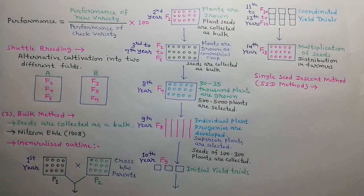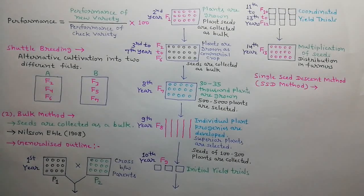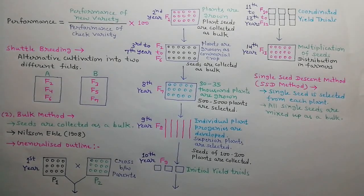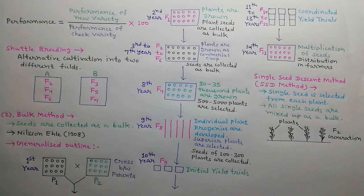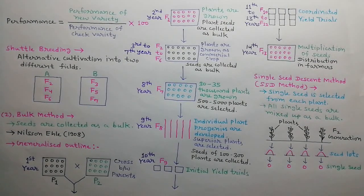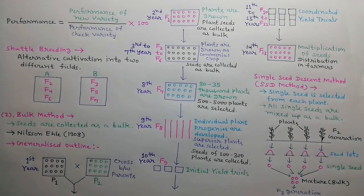There is also a simple and effective modification of the bulk method known as the single seed descent method, or SSD method. In this method, a single seed is selected from the seeds obtained from each plant of F2 generation. All the single seeds are then mixed up as a bulk, and F3 generation is raised by growing these seeds. For example, if there are four plants in F2 generation, each producing a small seed lot, one single seed is selected from each lot, all four seeds are mixed as a bulk, and grown to raise F3 generation.